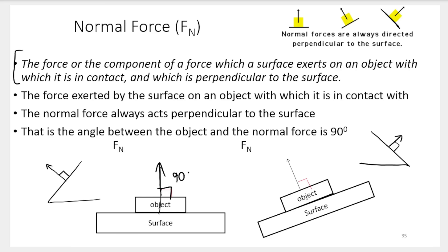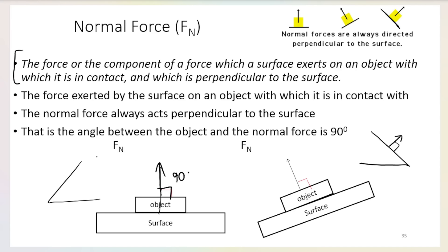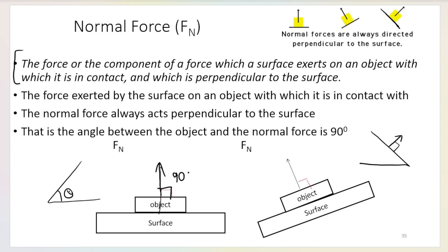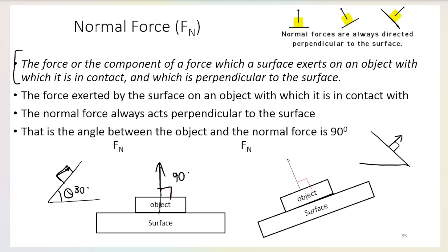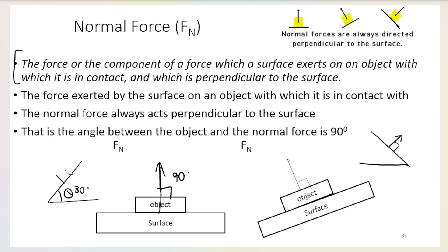When looking at these images, note that if a surface is flat or horizontal, the normal force acts straight up at 90 degrees relative to the surface. However, when we tilt the surface — such as when the object is on a slope — the normal force will also tilt, because it must remain at 90 degrees relative to the surface.